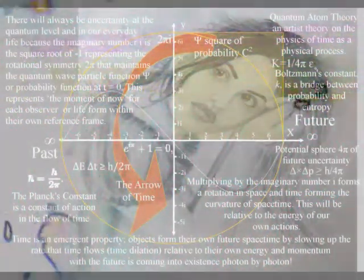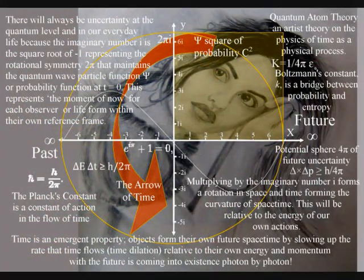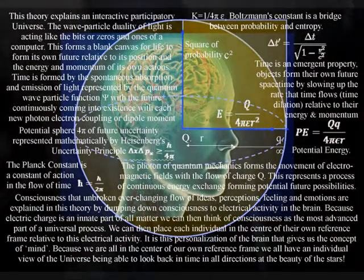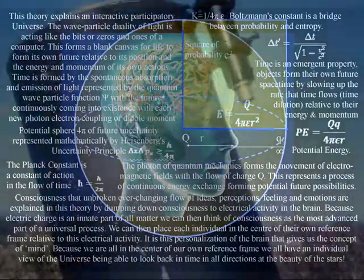If our eyes were more sensitive to the light, we would be able to see that everything is radiating electromagnetic radiation, or light, continuously, because the universe is never at absolute zero. In this theory, consciousness is the most advanced part of a universal process that can be explained by physics.